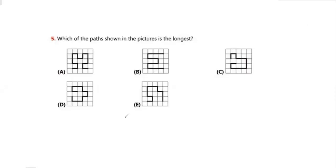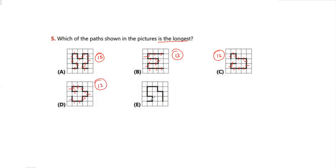Question 5: Which of the paths shown in the picture is the longest? Counting the units: path A has fifteen units, path B has thirteen units, path C has twelve units, and path D also has twelve units.